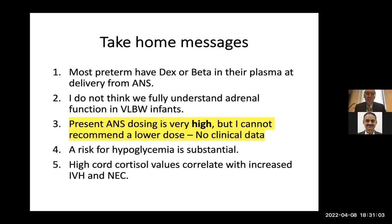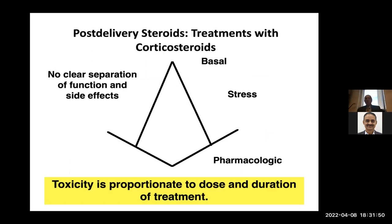The take-home message is that most preterms have dex or beta in their plasma at delivery. I do not think we understand adrenal function in these extremely low birth weight events — some of these kids have extremely high cortisol levels endogenously. The present antenatal steroid dosing is very high, but I cannot recommend a better dose because we don't have clinical data. There is also an increased risk of hypoglycemia with this dosing.